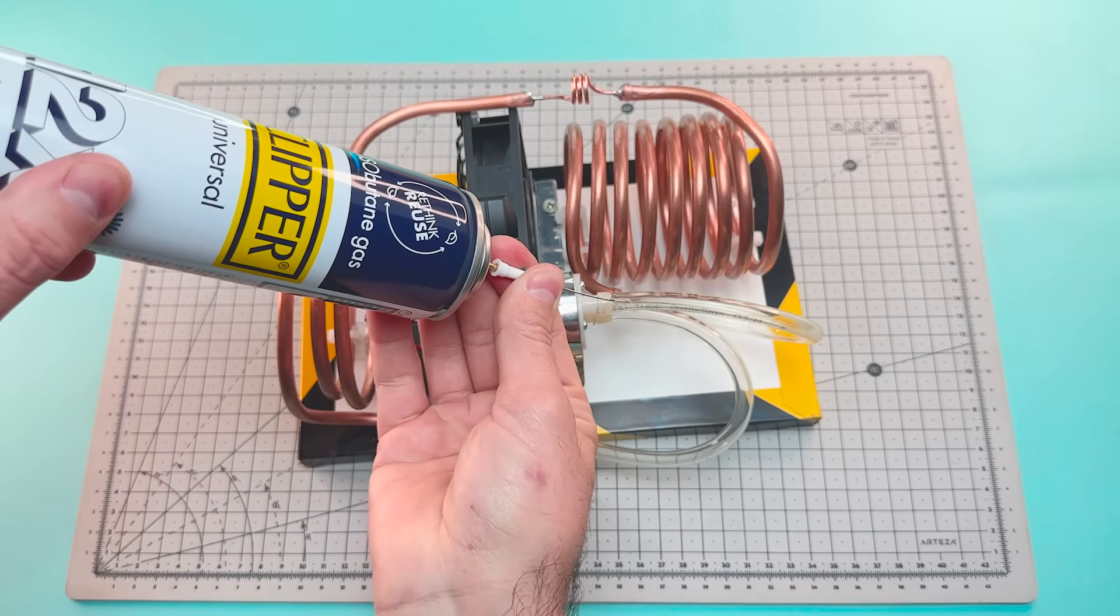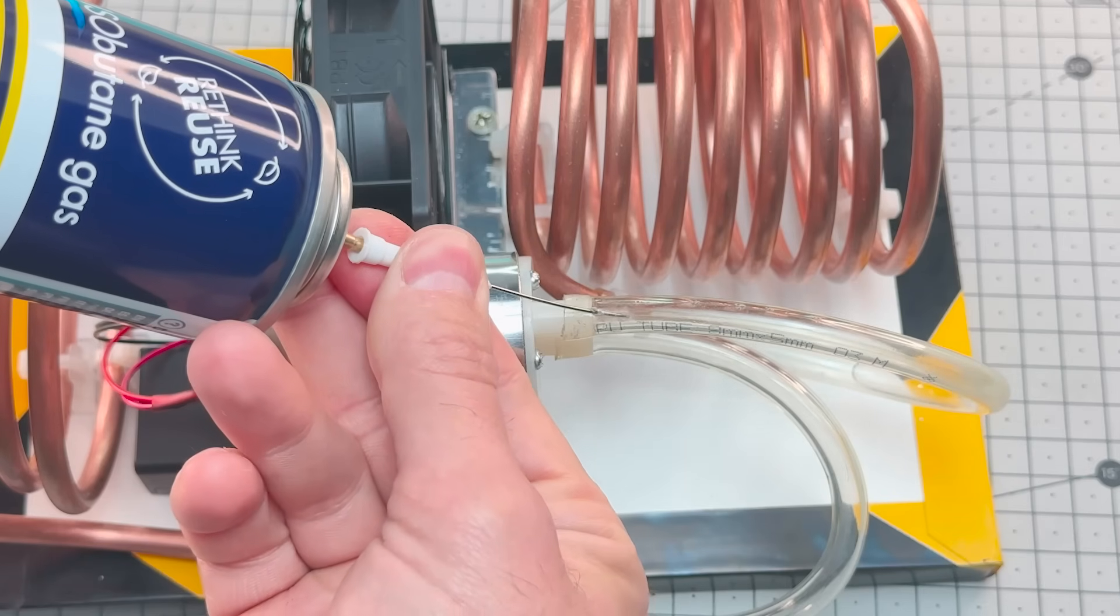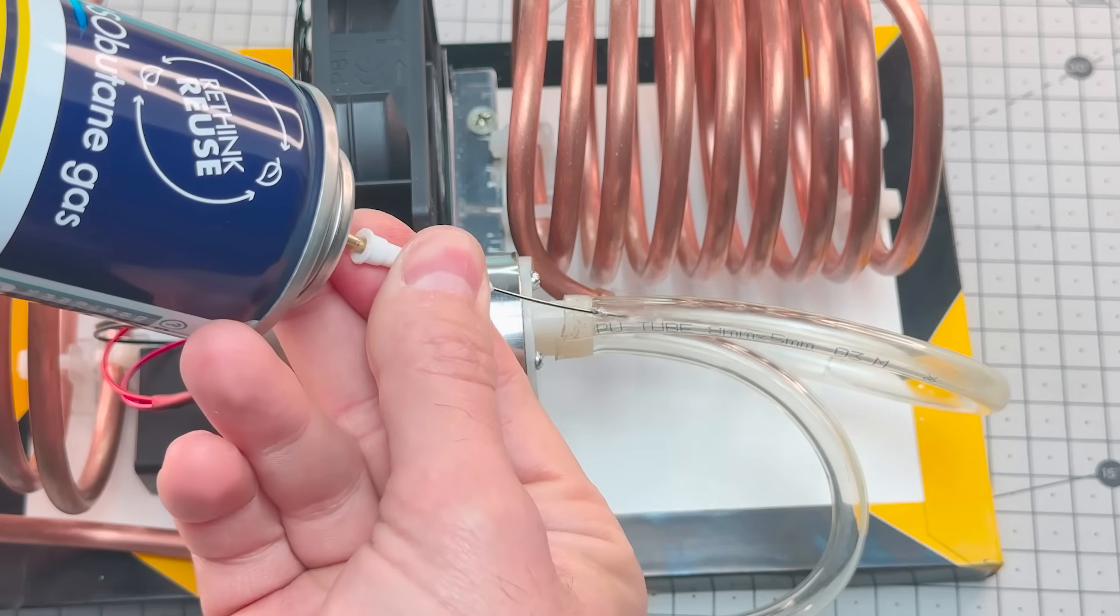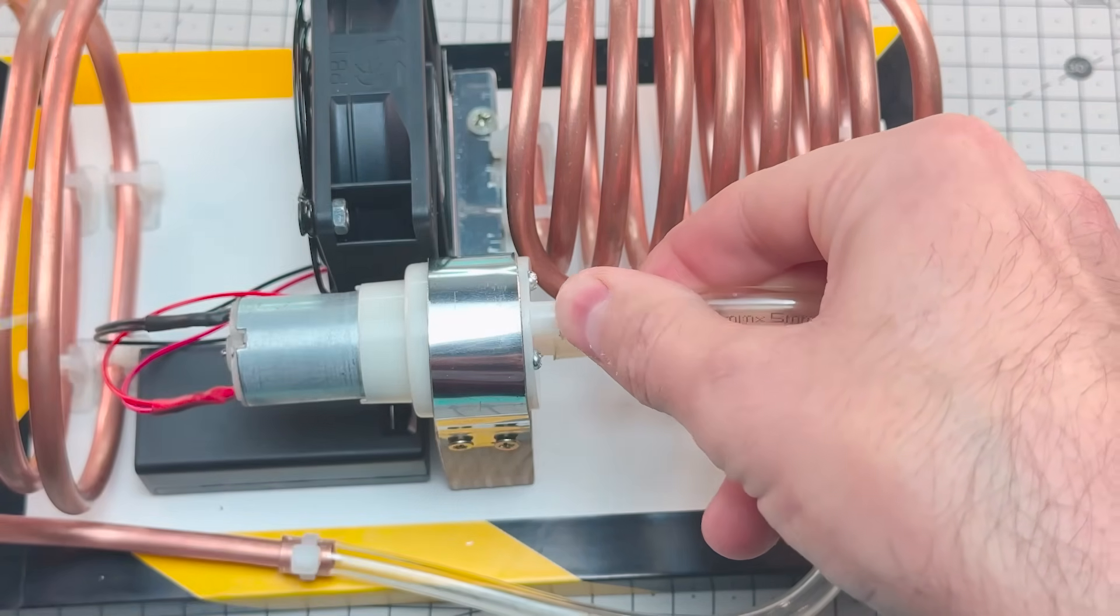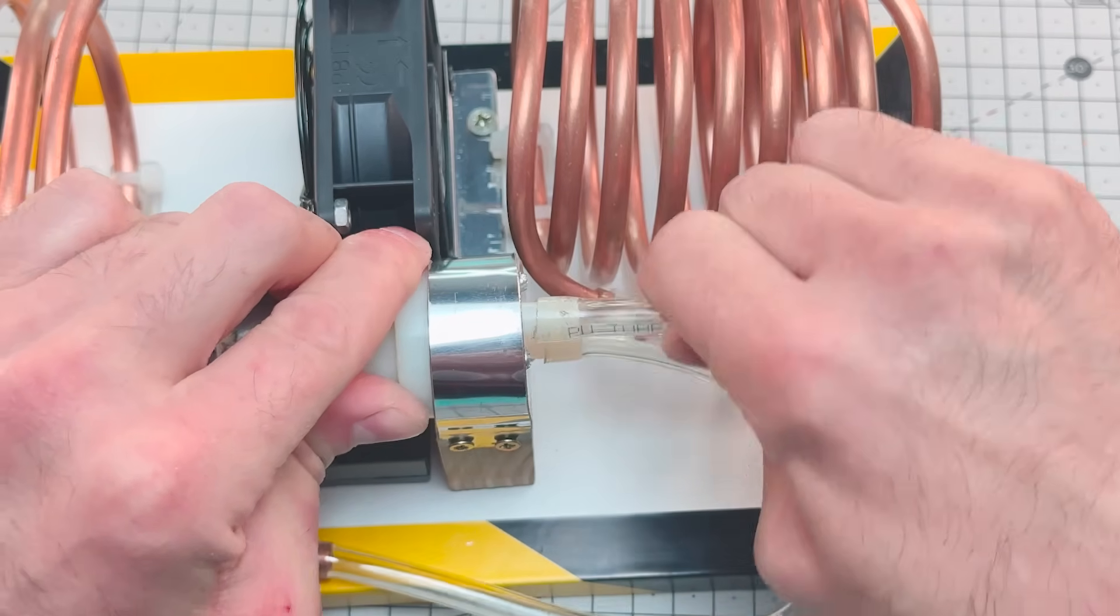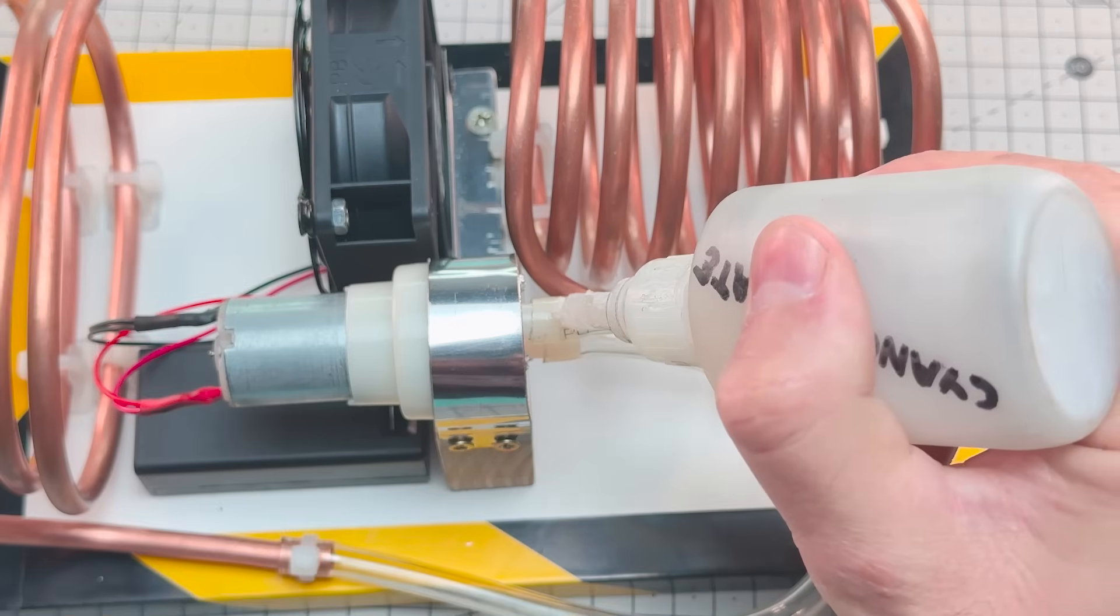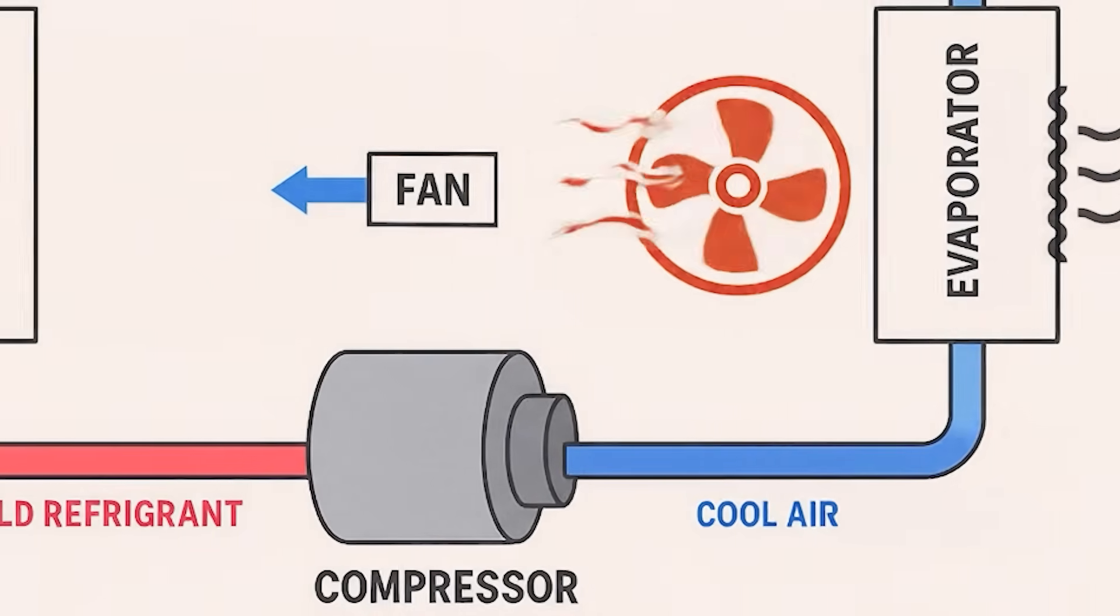This tube, usually made of copper due to its excellent thermal conductivity, acts as the evaporator. If we blow air through it with a fan, that air cools down instantly. But the cycle doesn't end there. Once the gas evaporates, it needs to become liquid again to repeat the process.